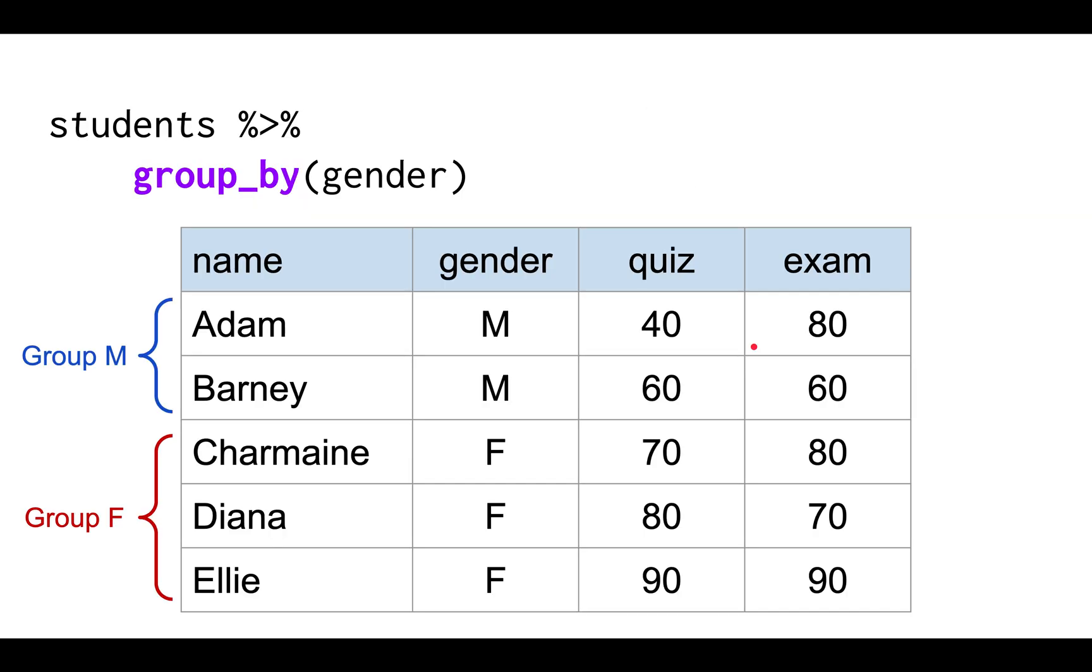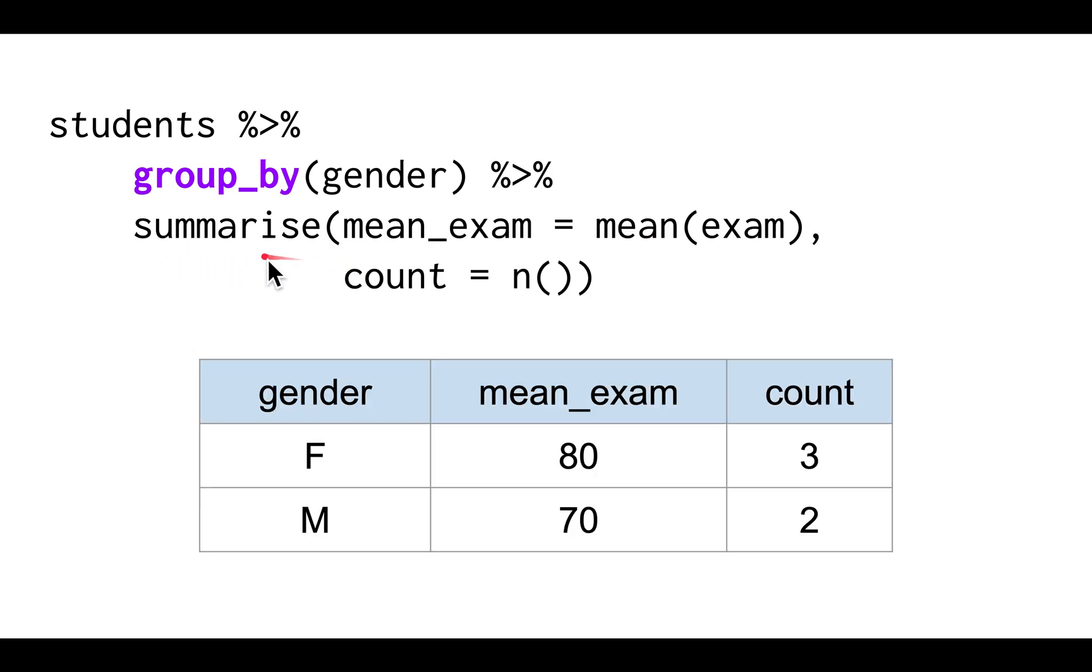Here's an example of the group_by function. Group_by basically splits a data frame into groups based on the columns you specify. For example, this group_by gender splits the rows into the groups with males and females. And then if you use summarize after that, it computes the mean summary statistics for each group separately. So you compute the mean exam score for the females and the count, and the mean exam score for the males and the count.